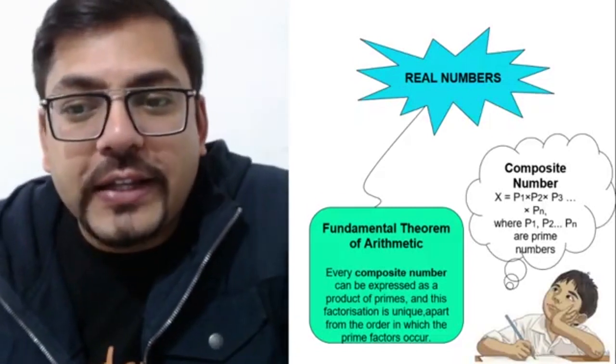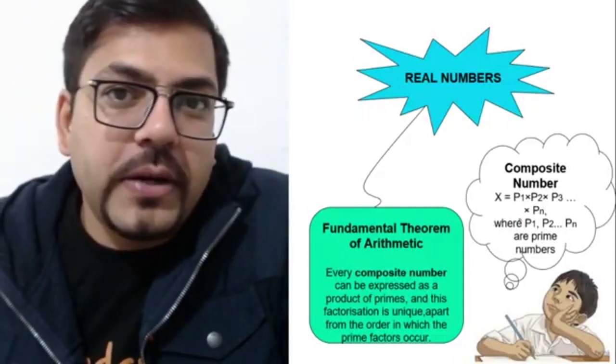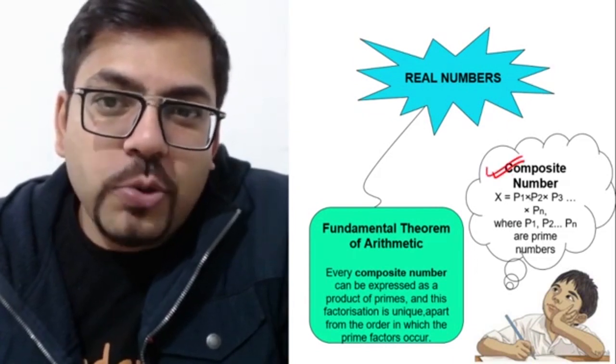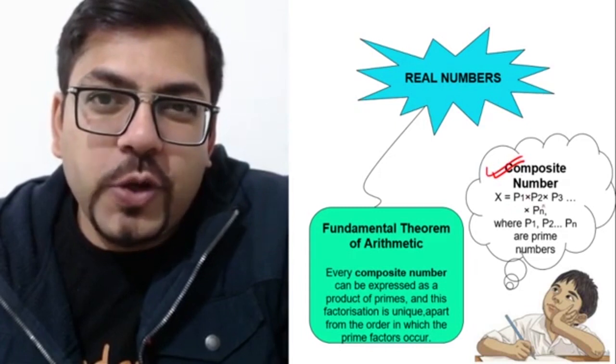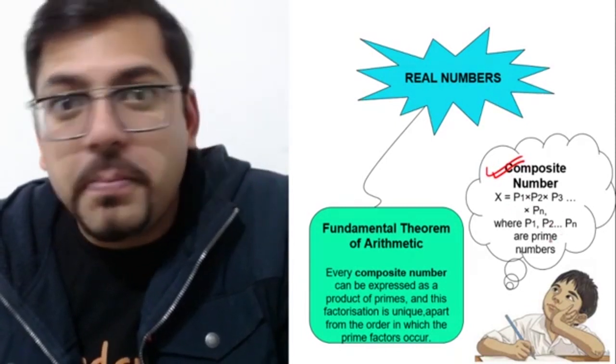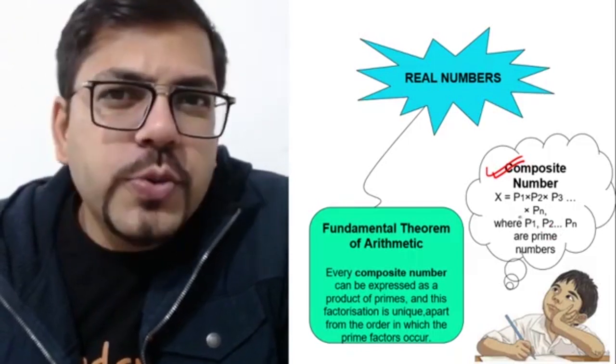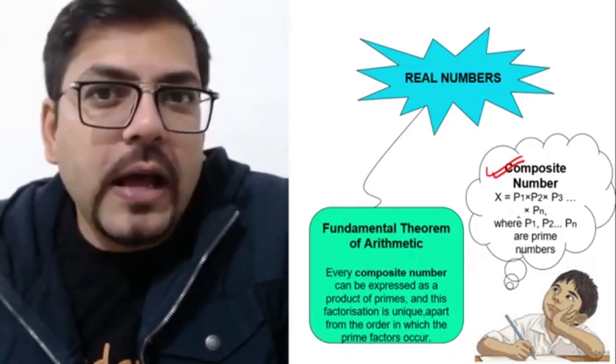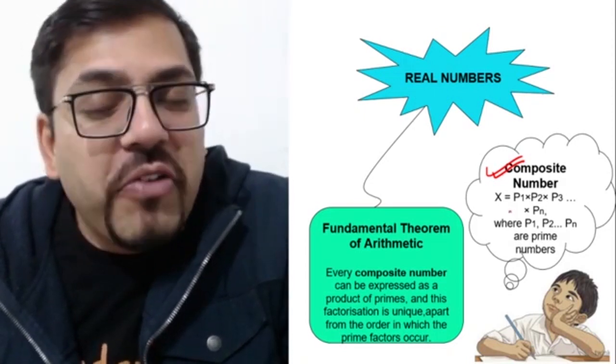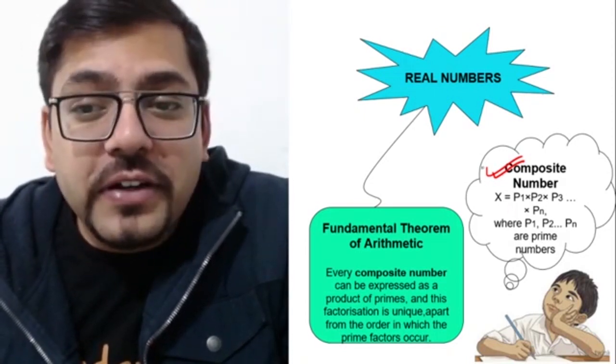In fact, I also used to think like this - what is this fundamental theorem of arithmetic? And in the book it used to be written like composite number x equals p1 into p2 into p3 dot dot dot pn, where p1, p2, p3 are prime numbers. And I always used to think, what is this man, I really can't understand.